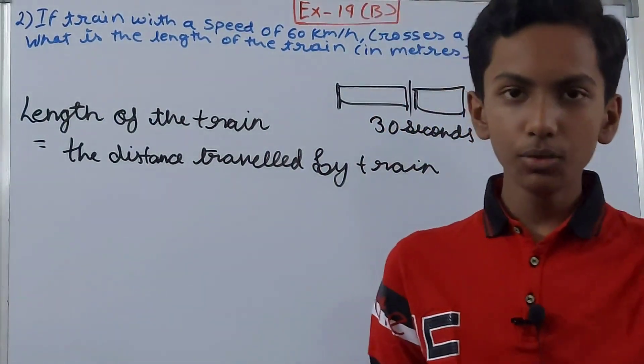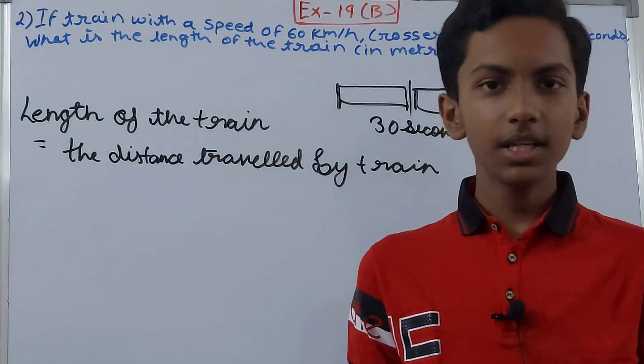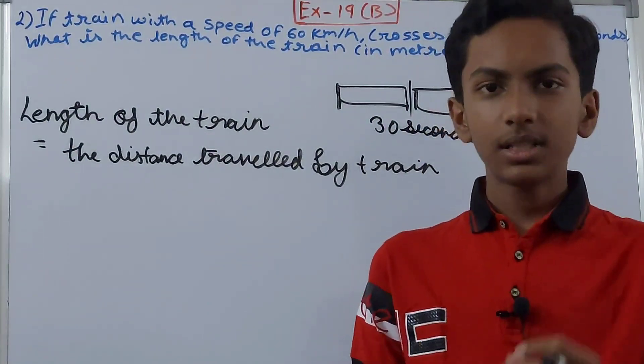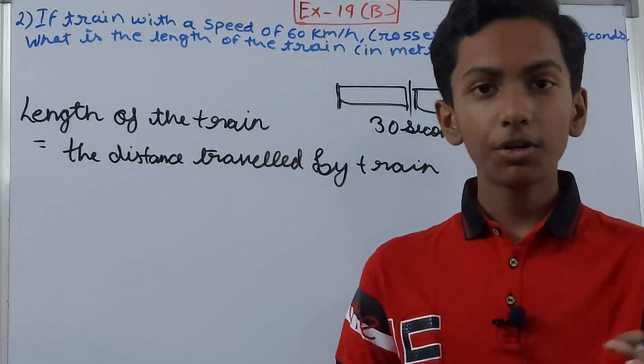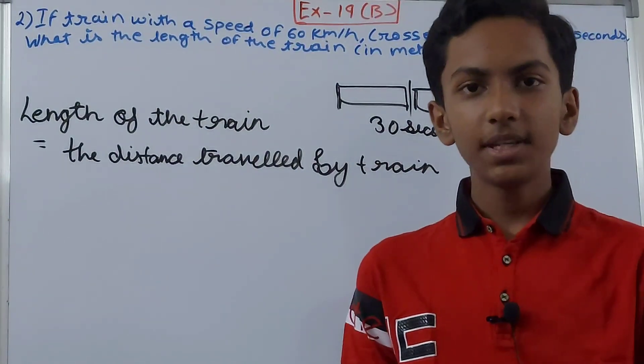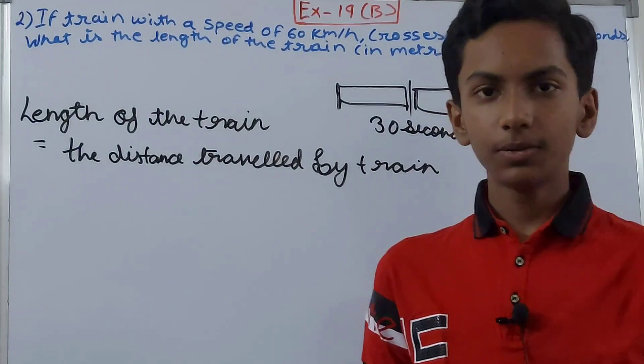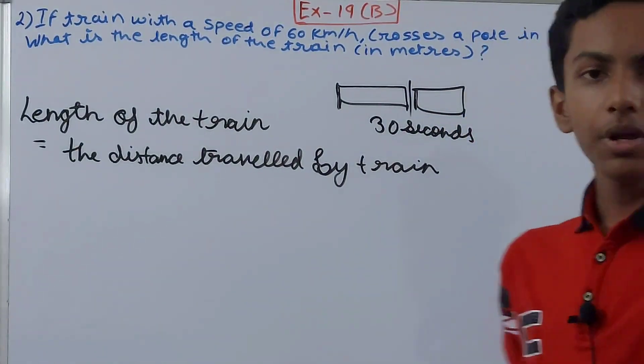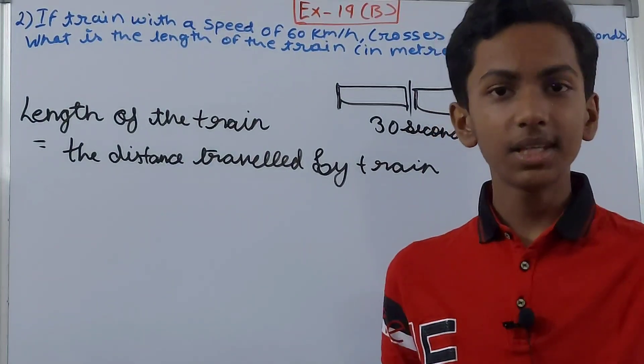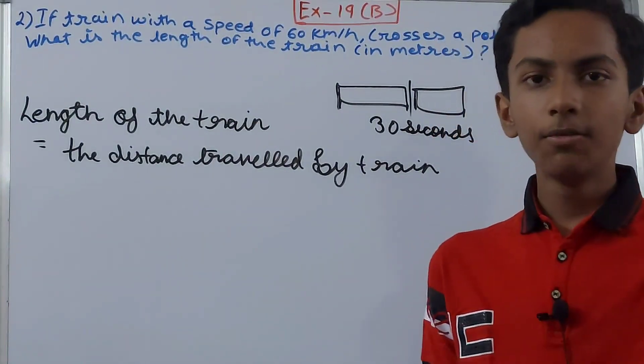But this is only used when the train is crossing a pole or something like that which is not really that long - we can simply just ignore the length of that thing like a pole.